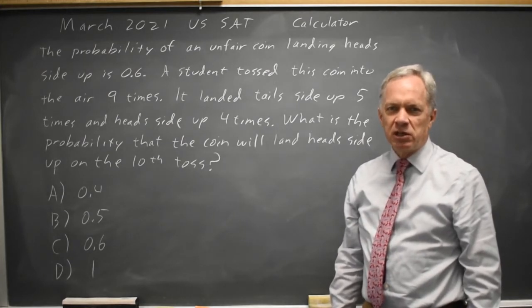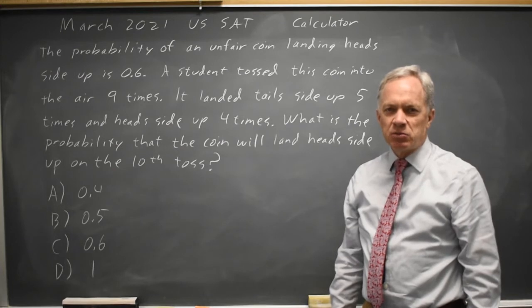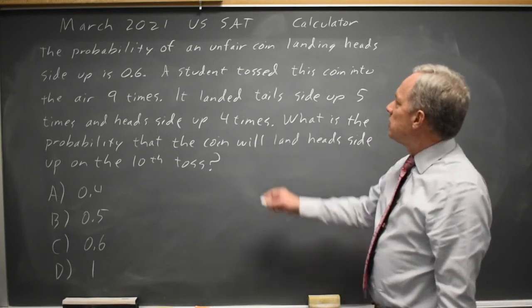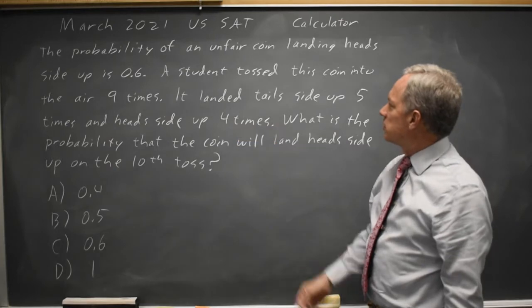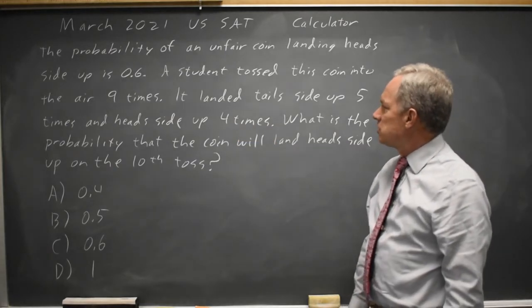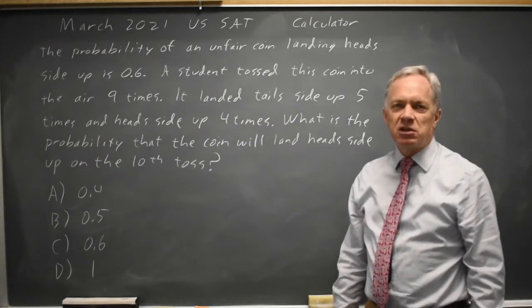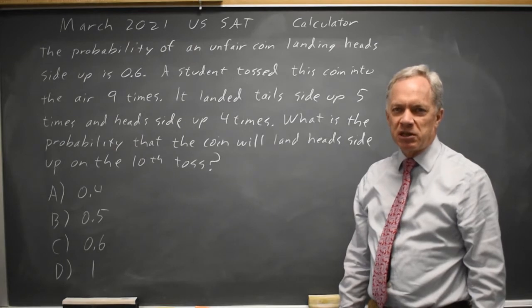It doesn't mean that in the short run you have to come up with 60% heads. If a student tosses a coin nine times and five are tails and four are heads, that will not change the probability of the outcome on the next flip.